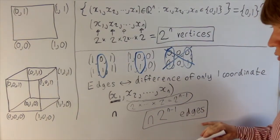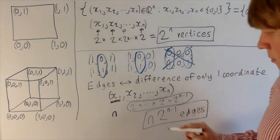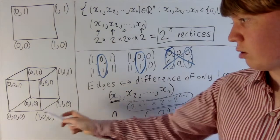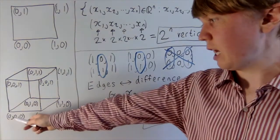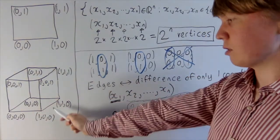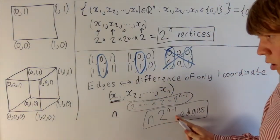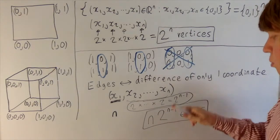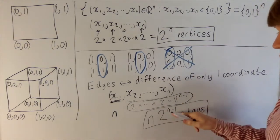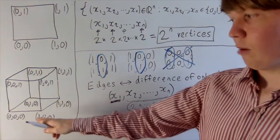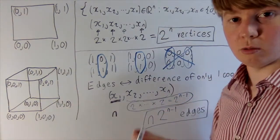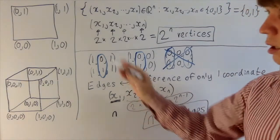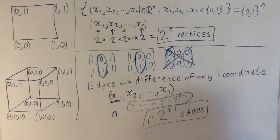For example, in three dimensions where n = 3, you have a choice of whether you vary x, y, or z. Once you've fixed that, you have 2^(3−1) = 4 choices for how you place the other coordinates. This formula works for the square and for any higher dimension n.